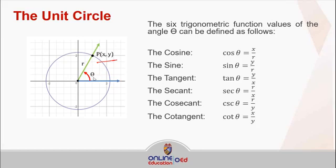Cosine of theta is equal to x over r — that's the x-coordinate of the intersection of the terminal side ray and the radius. Sine of theta is y over r, that's the ratio of the y-coordinate of point P to the radius r. The tangent is simply the ratio of the y-coordinate to the x-coordinate. The secant, cosecant, and cotangent are the reciprocals of cosine, sine, and tangent respectively. So secant is r over x, which is the reciprocal of x over r. The tangent is y over x, whereas the cotangent is the reciprocal of that, or x over y.